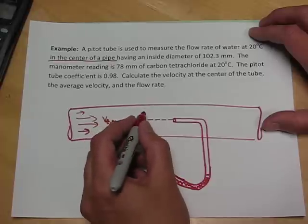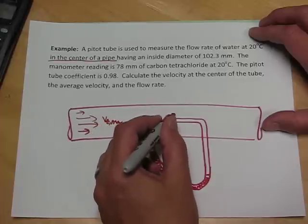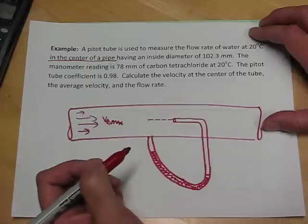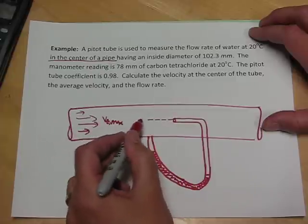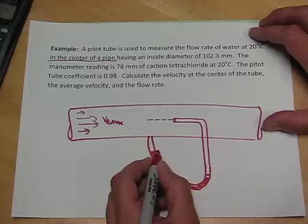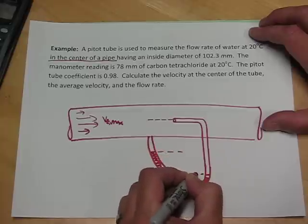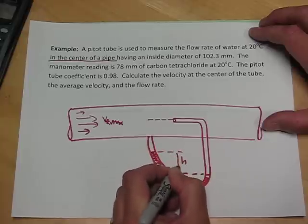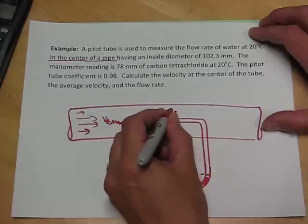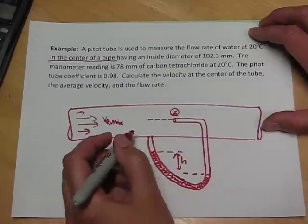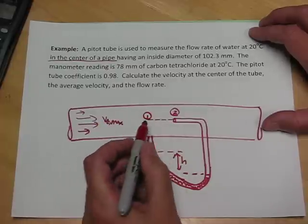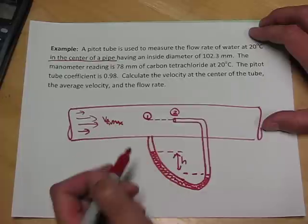So we want to be able to equate the pressure that we can somehow measure at this stopping point, which is called the stagnation point, with the velocity of the streamline that's being intercepted. So we have a reading here on the manometer, let's call that reading H, and we have a point here, point 2, that intercepts the flow, and I'm going to choose point 1 here, right above where the manometer is measuring, as a point that has a velocity VZ max.